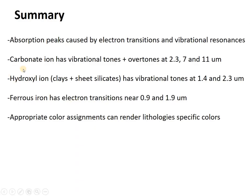So in summary, we've seen that absorption peaks are caused by electron transitions and vibrational resonances in rocks. The carbonate ion has vibrational resonances at 2.3, 7, and 11 microns. The hydroxyl ion in clays and sheet silicates has vibrational resonances at 1.4 and 2.3 microns. Ferrous iron in iron oxide minerals like hematite has electron transitions near 0.9 and 1.9 microns. And if we use the appropriate color assignments, we can render lithologies into specific colors on our image. Thanks everybody.